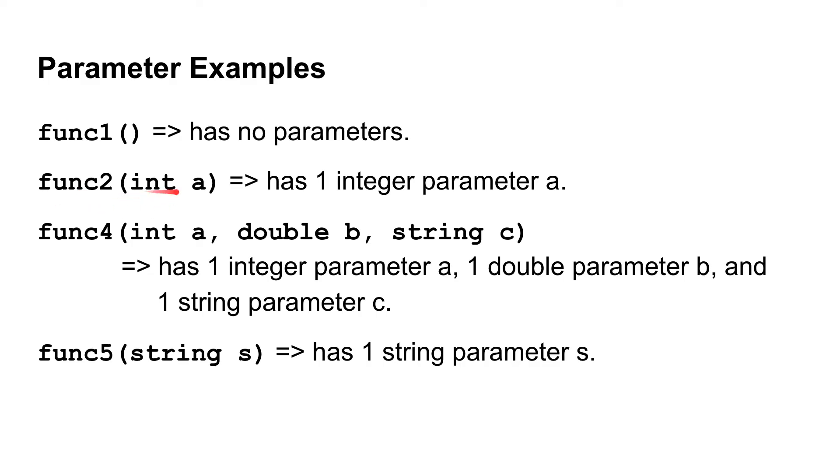Here we have func2, which has an integer parameter of a. And when you call this func2, you would call it by saying func2 and then just putting some integer inside of the parentheses. You wouldn't put int and then the integer. You would just put an integer there, and this func2 would be able to take that integer.